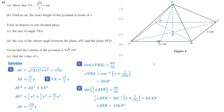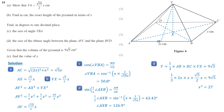In right angle triangle AXM, we can find angle AXM, which is half of angle AXB. The sine of this angle is the ratio of AM to AX. Taking the sine inverse and multiplying the result by 2, we get angle AXB equals 126.9 degrees. Finally, we need to find the value of x when the volume of the pyramid is 9 root 5. The formula for the volume of a pyramid is 1 third times base area times height. The base area is 2x times x and the height is root 5 over 2 times x. Solving the equation, we get x cubed equals 27, so x equals 3.